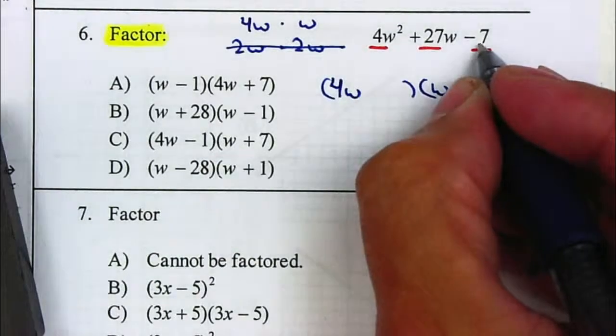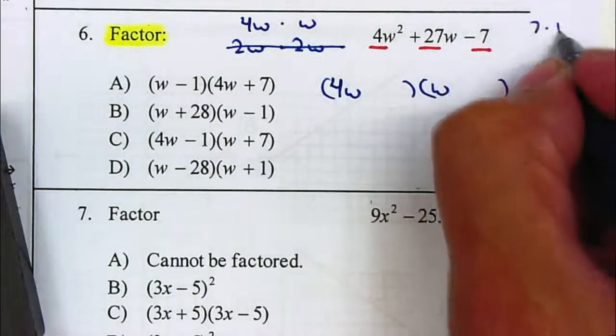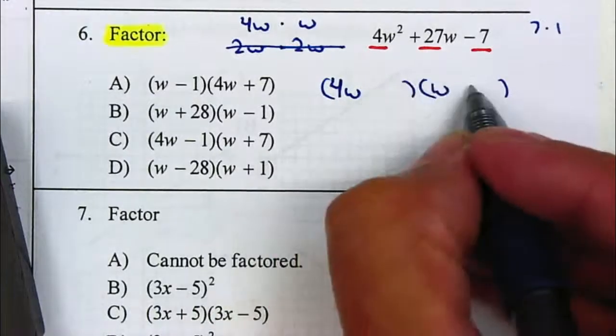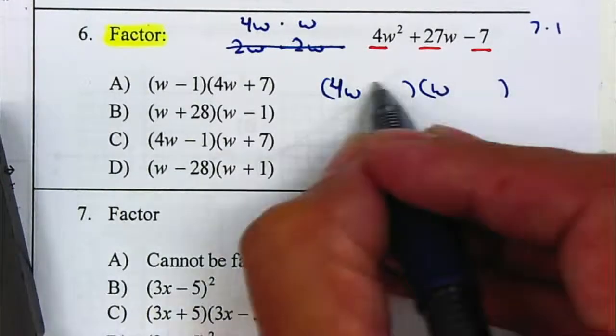Factors of 7. This is a negative 7. So the only factors of 7 are 7 multiplied by 1. This is a negative 7, so one of them should be negative. The other one should be positive or vice versa.